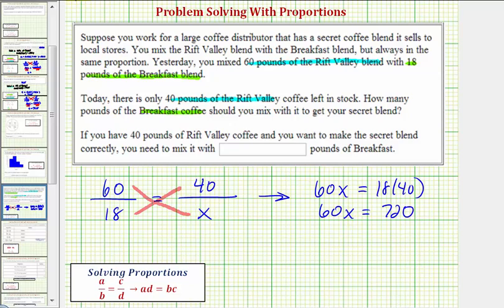To solve for x, we divide both sides by 60. Notice on the left side here, 60 divided by 60 simplifies to 1, and 1 times x is just x. On the right side we have 720 divided by 60, which is equal to 12.